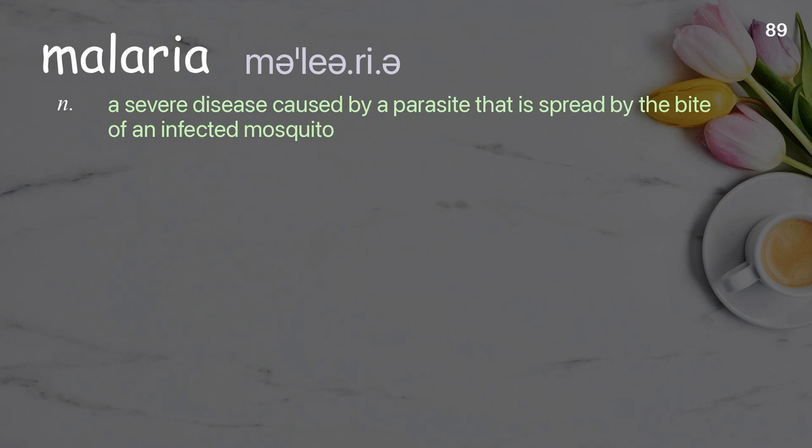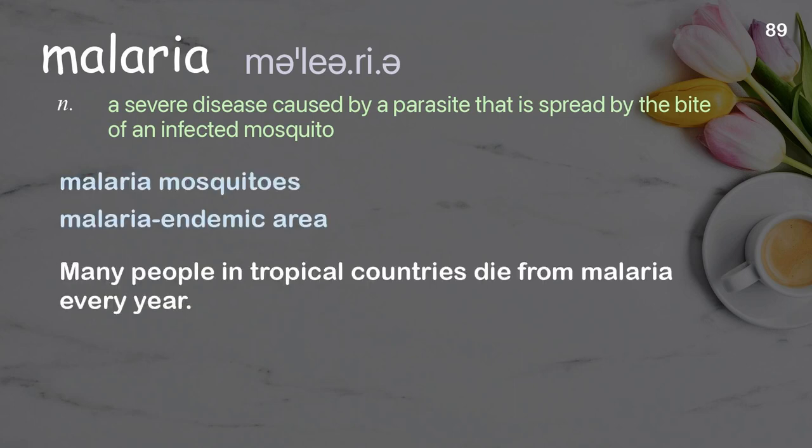Malaria: A severe disease caused by a parasite that is spread by the bite of an infected mosquito. Examples: Malaria endemic area. Many people in tropical countries die from malaria every year.